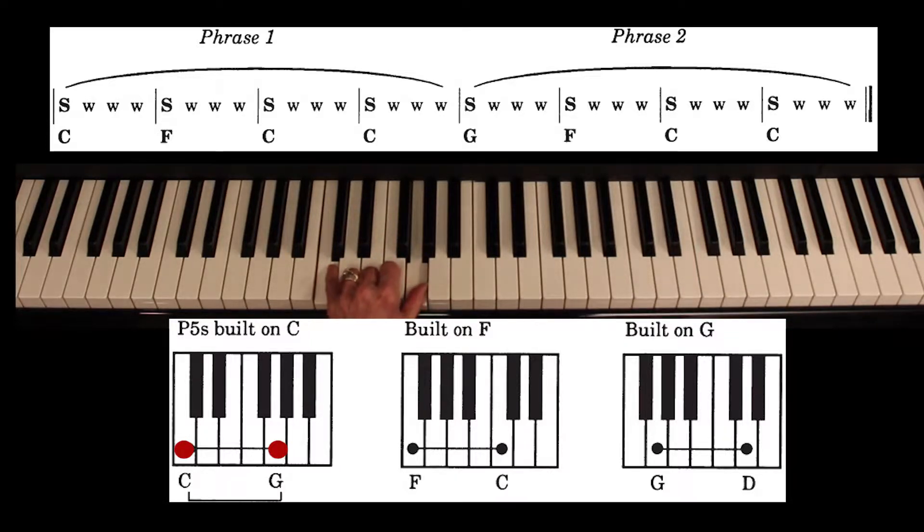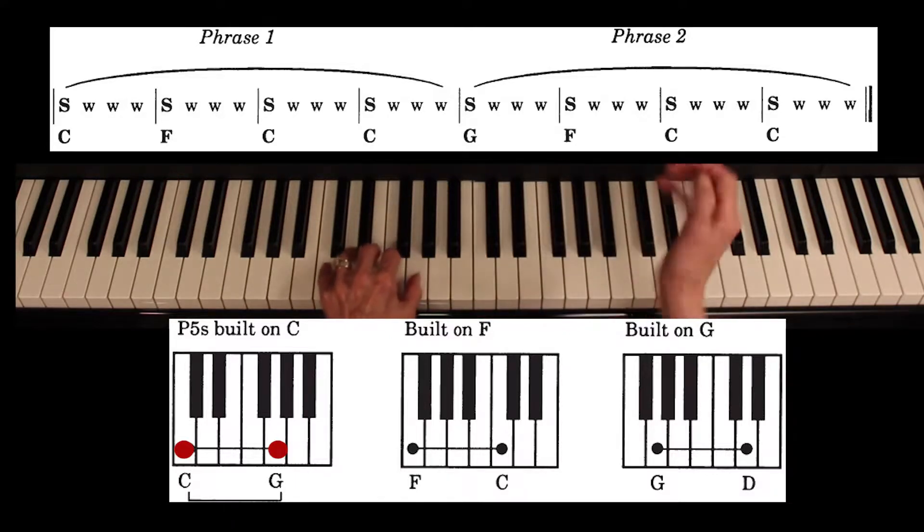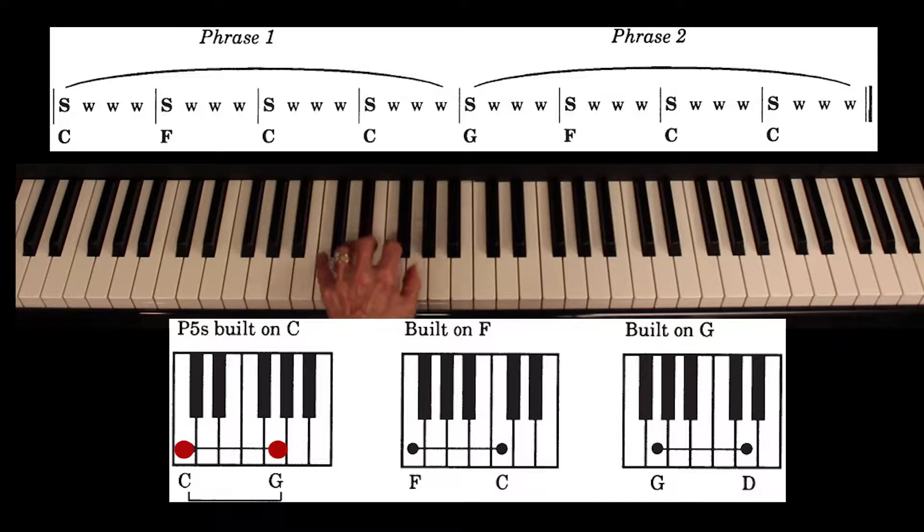Now if you look at the diagram that's showing at the bottom of the screen, you will see these two pitches, C and G, outlined or highlighted in red. Now I'm pulling fingers under the hand just so you can see which keys I'm playing. When I start to play, my hand is going to be curved like this. But I just want you to see the three ingredient perfect fifths.